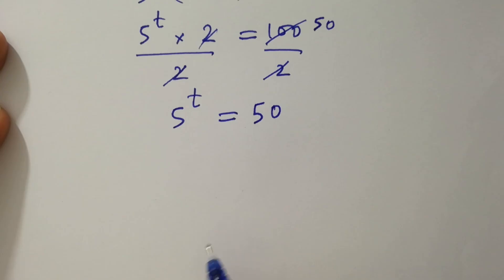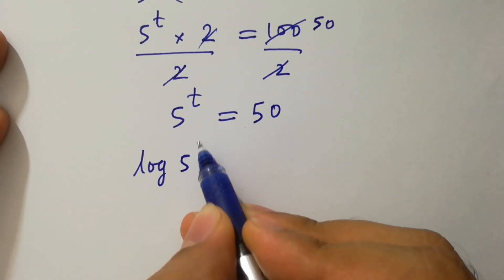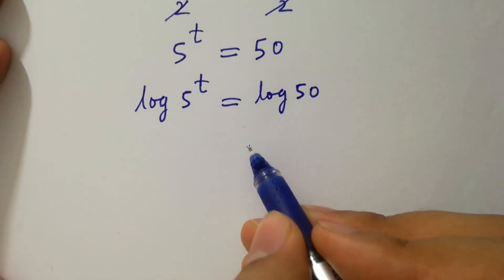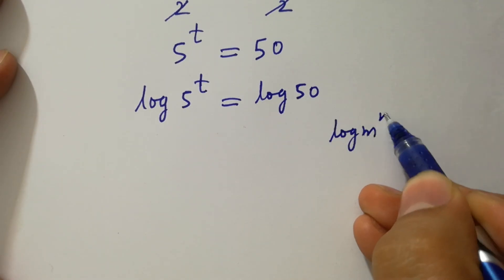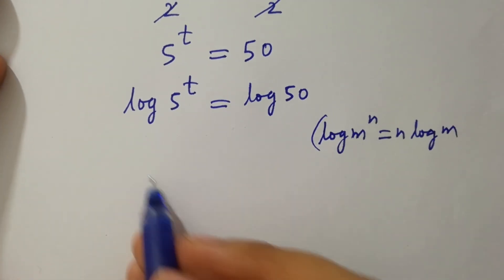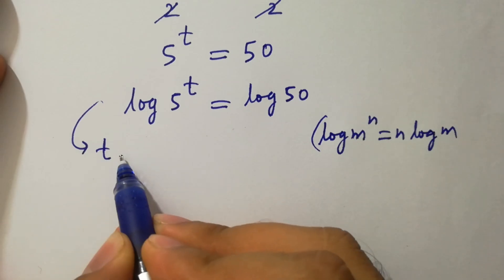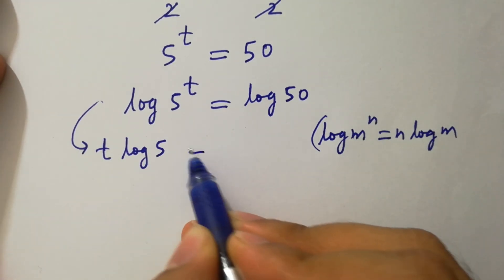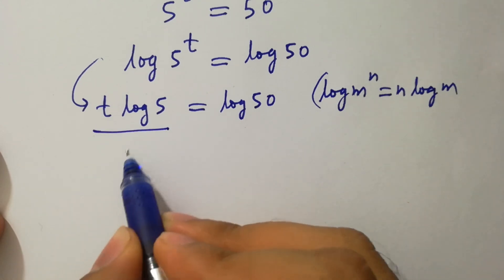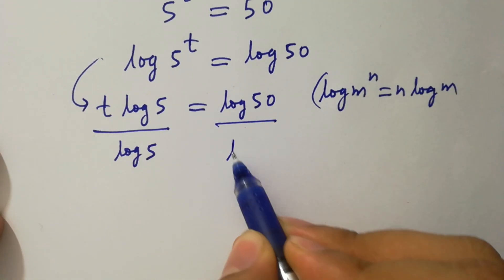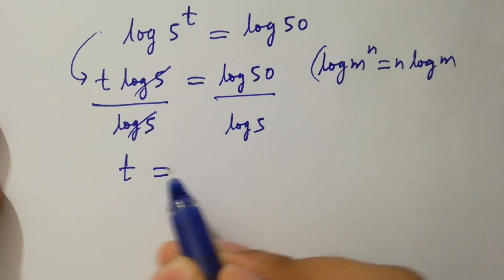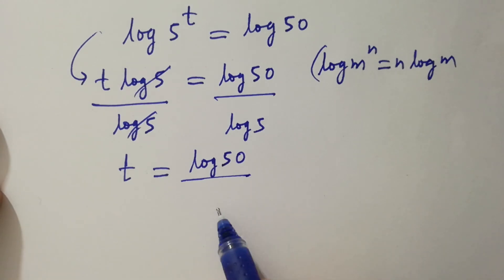To solve this, take log on both sides: log of 5 to the power t equals log 50. Since log m to the power n equals n log m, it becomes t log 5 equals log 50. Dividing both sides by log 5, we get t equal to log 50 over log 5.